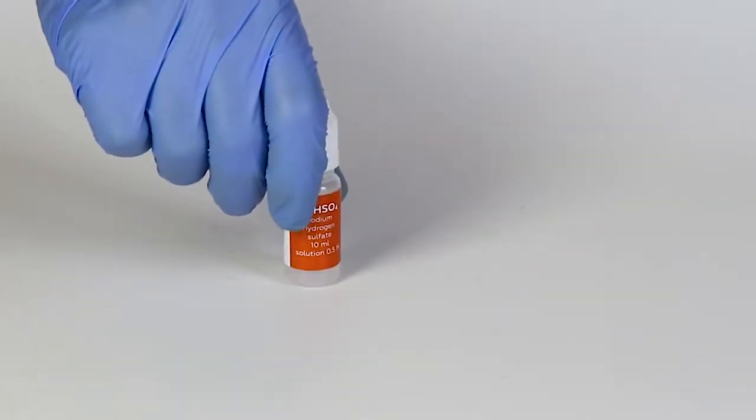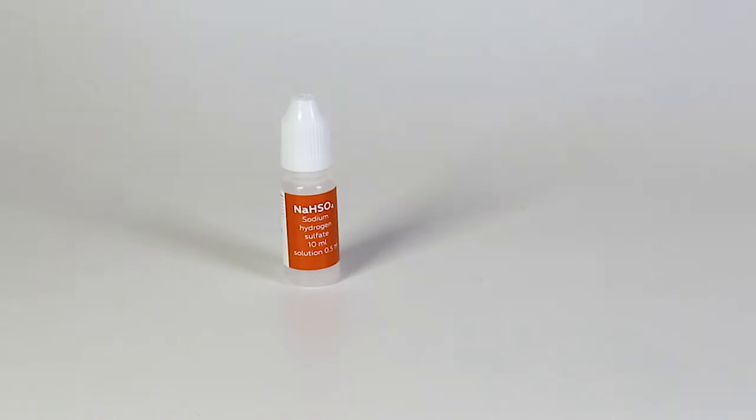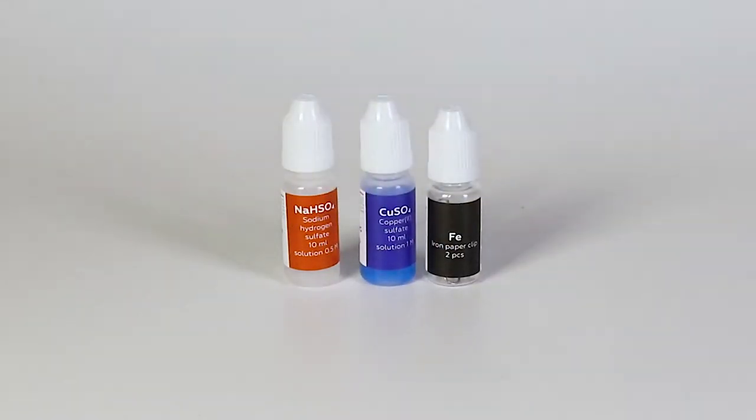For the copper clip experiment, you will need the solutions of sodium hydrogen sulfate and copper sulfate, an iron paper clip, two glass slides, and two rubber bands.